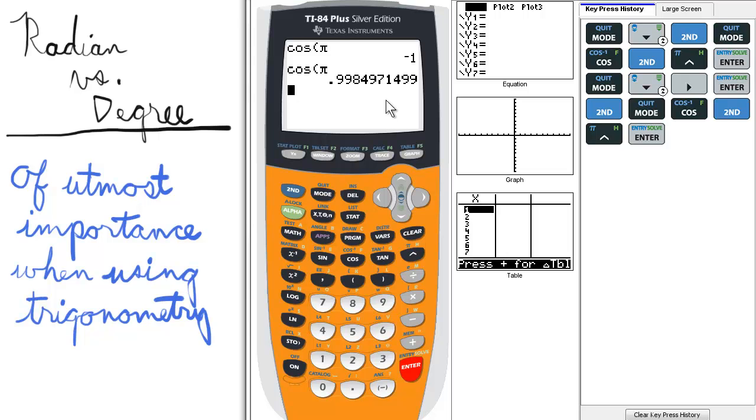Radians usually are associated with pi, or fractions thereof. Degrees are usually 30, 45, 60, 90, et cetera.